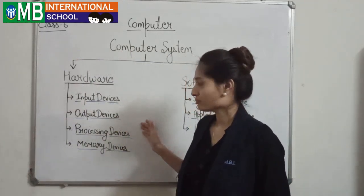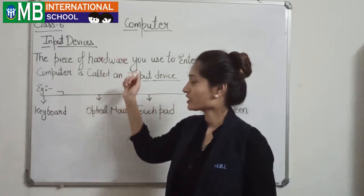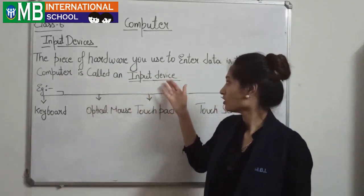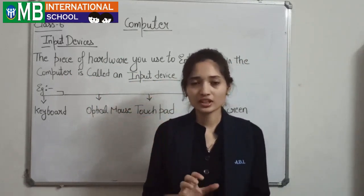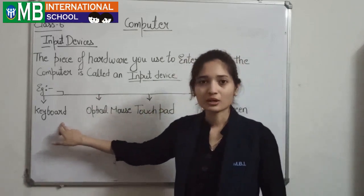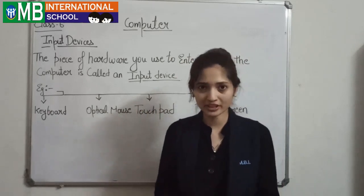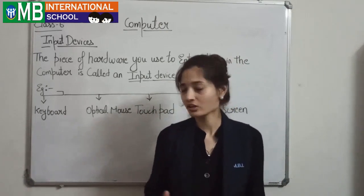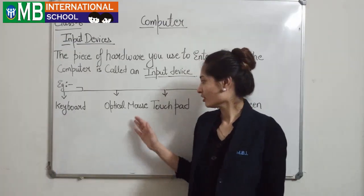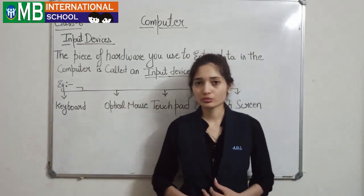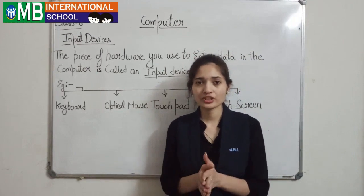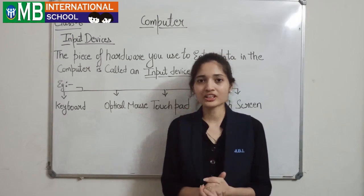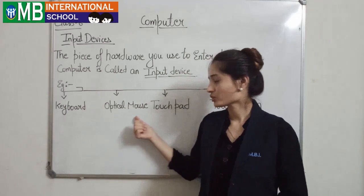Now, input device. The piece of hardware you use to enter data into the computer is called an input device. Whatever data or instructions we enter into the computer — these are done through the input device. Examples: keyboard — we use the keyboard to type instructions which appear on the monitor. Mouse — we use the mouse, right and left click, to open icons or functions on the computer monitor. These are input devices.